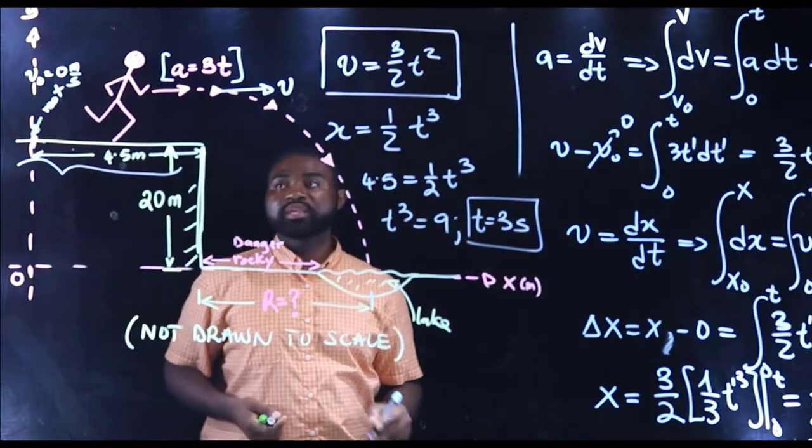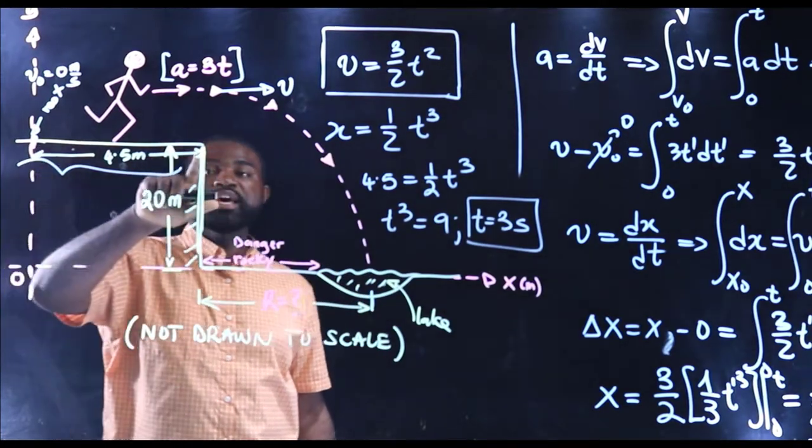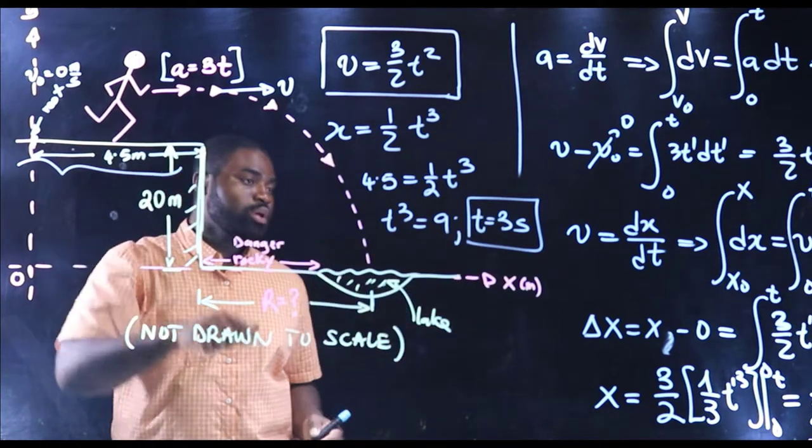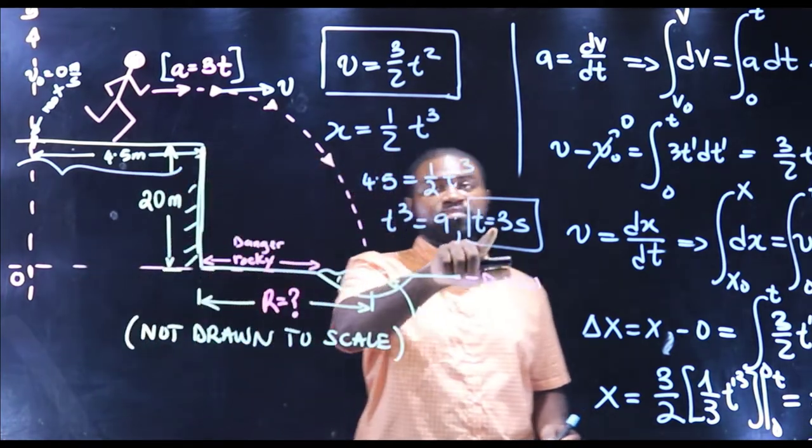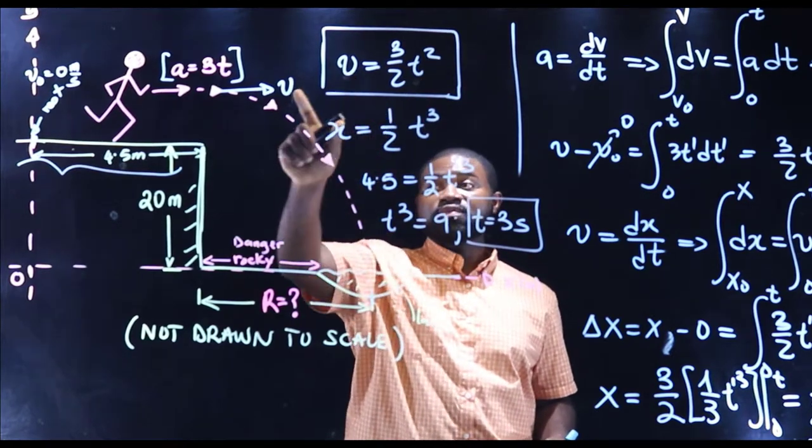So the time it takes for John to run from the initial point to the edge of the cliff is just three seconds. Given that we know that the time is three seconds, we can plug that time in there to calculate the initial velocity v.